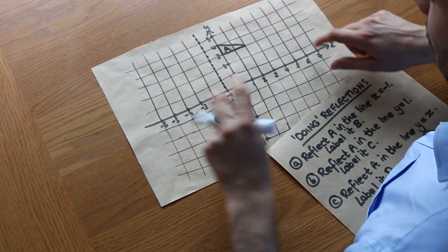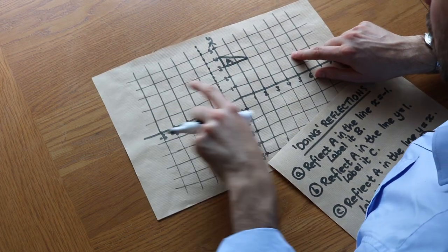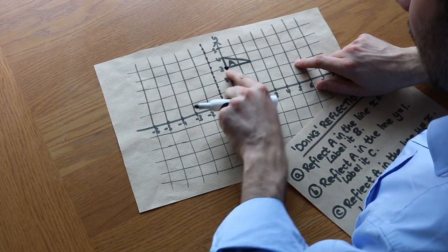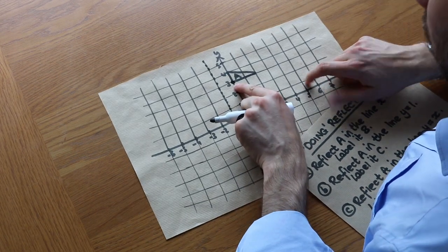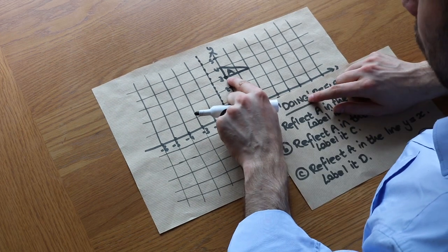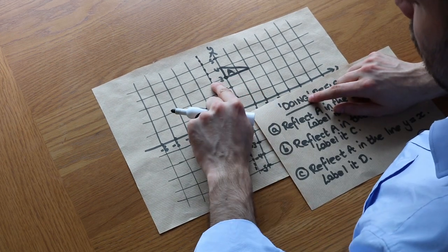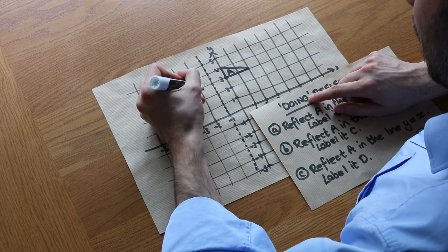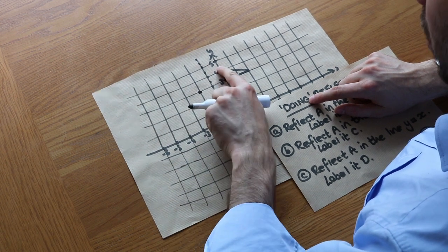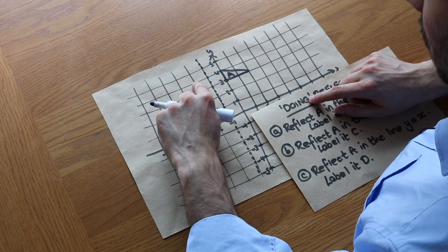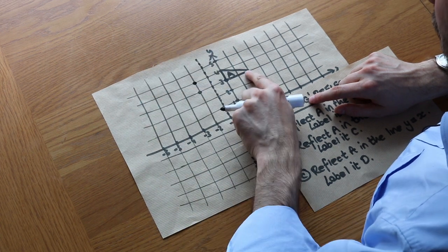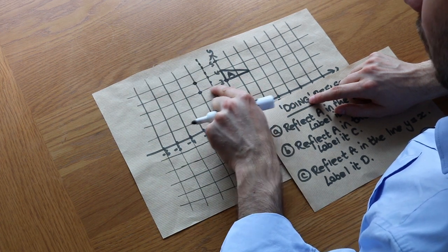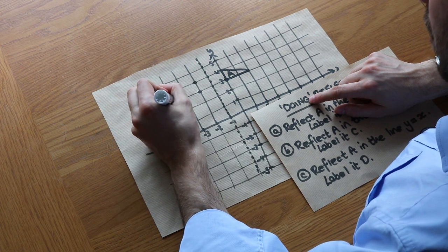Now we can reflect this shape in that line, going point by point. This point here — we go directly towards the line of reflection, one square left until we hit it, then one square left again, so it ends up here. That one: one square left to the line, one square left again. And this point: one two three squares left to the line, then one two three squares left again, ending up here.